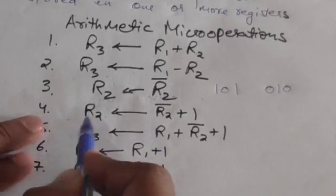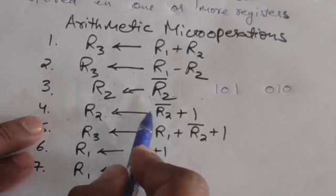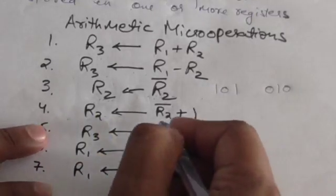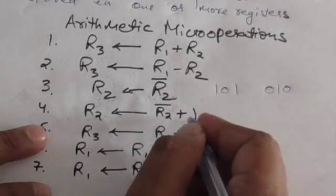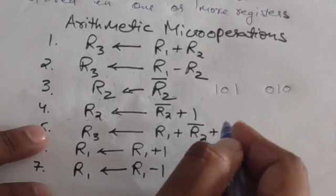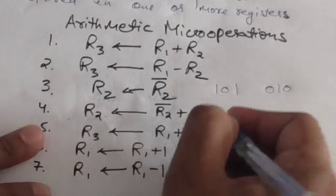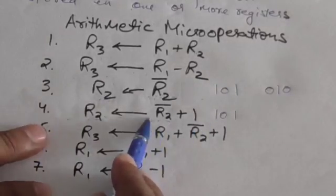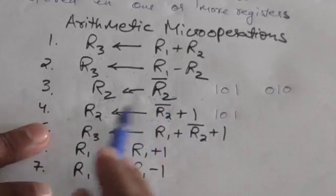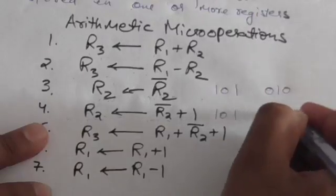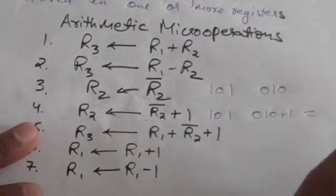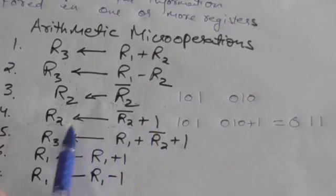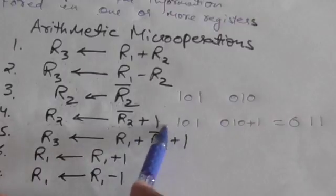This fourth statement represents a micro operation in which the content of R2 is replaced by its two's complement. The two's complement of a binary number is the one's complement plus one. So if the content of R2 is 101, after this micro operation it becomes 010 plus 1, which is 011.